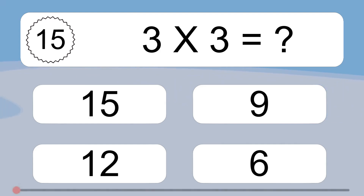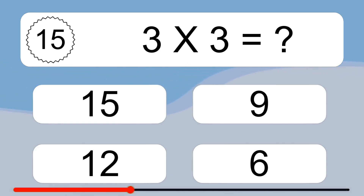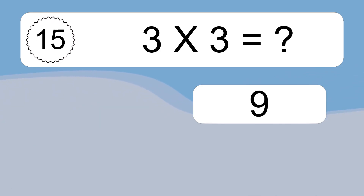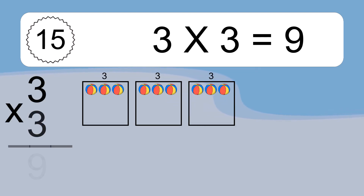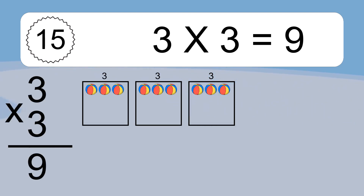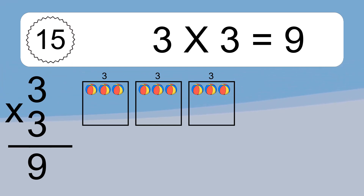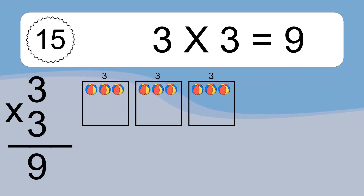Three times three equals what? Three times three equals nine. We have three boxes, and each box has three colorful balls inside. If you count all the balls in all the boxes together, you will have three times three balls. This equals nine balls.